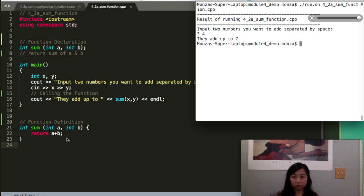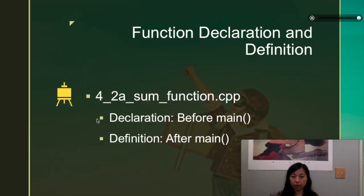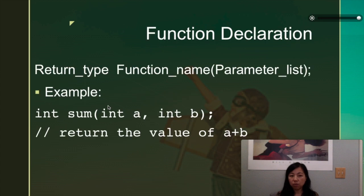So pretty straightforward. So if we make it more generic, how does a function declaration, which is above the main function, that's where we put the declaration there. In the example, I repeated here. So return type, first of all, we tell the program, okay, we are going to return an int, expect an int, integer.